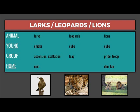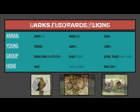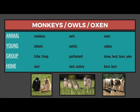The young of lions are cubs. A group of lions is a pride or a troop. The home of lions is a den or a lair. The young of monkeys are infants. A group of monkeys is a tribe or a troop. The home of monkeys is a nest.